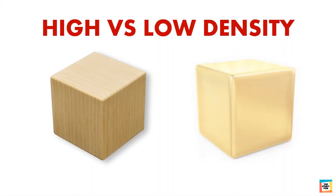Here we have one cube of wood and one cube of gold — both have the same mass. If we put them in a tub of water, which one will float and which will sink? Wood will float because it has less density than water, and the gold cube will sink because its density is higher.